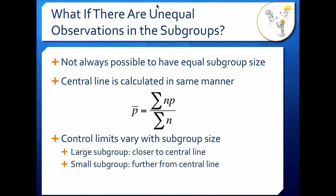So if you cannot get your subgroup size equal, you're going to have to account for those differences in how big your subgroup is.